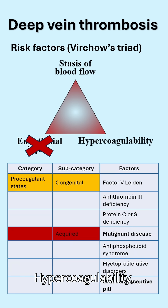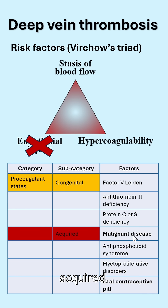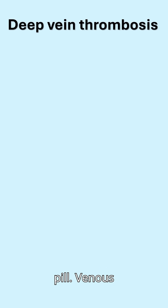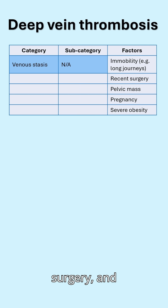Hypercoagulability, or procoagulant states, can be categorized as congenital and acquired. Important ones to remember are malignancy and the oral contraceptive pill. Venous stasis can occur in long states of immobility, recent surgery, and pregnancy.